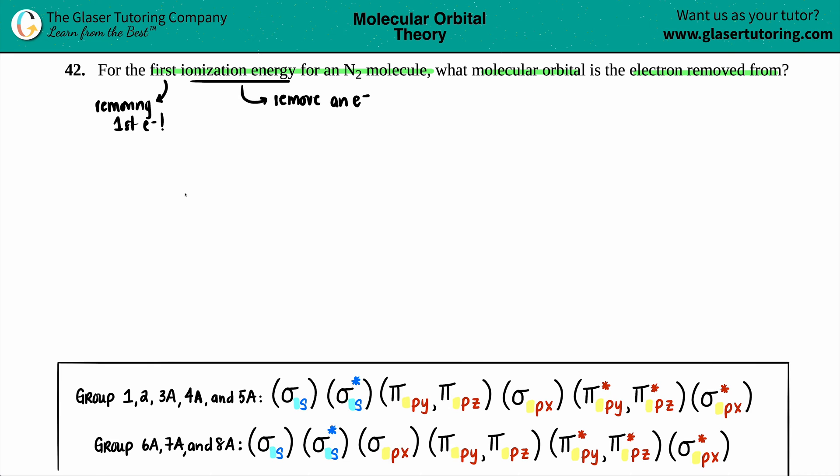So removing first electron. Now they're talking about molecular orbitals. So we basically have to first find out what N₂'s configuration is, what N₂'s valence electron molecular orbital configuration is. Now, molecular configurations, which are basically the framework is down here, they're reliant on valence electrons.